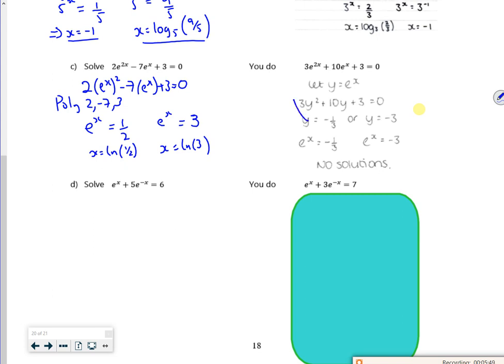So remember, I don't bother with this. I just go straight for poly with 3, 10 and 3. Seeing that's 3 lots of e to the x all squared.